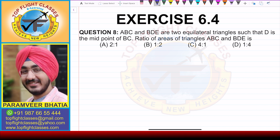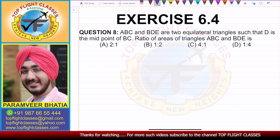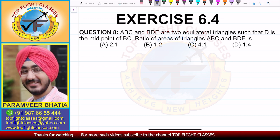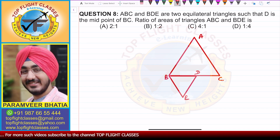In this video we are going to solve question number eight of exercise 6.4. The question says: ABC and BDE are two equilateral triangles such that D is the midpoint of BC. We need to find the ratio of the areas of triangles ABC and BDE. To solve this, we have a diagram showing both triangles.